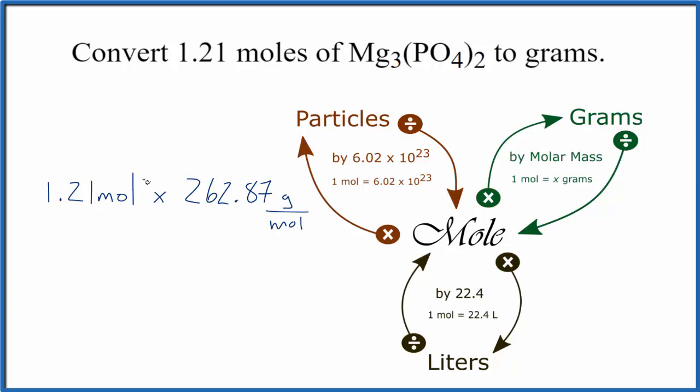When we multiply, we have moles on top and the bottom. They cancel out, and that gives us grams, which is what we're looking for. So we end up with 318.07 grams of magnesium phosphate.